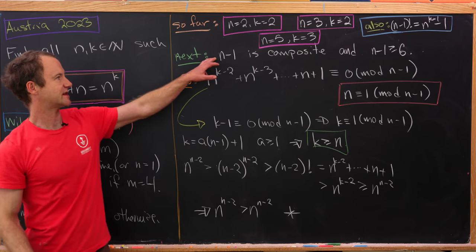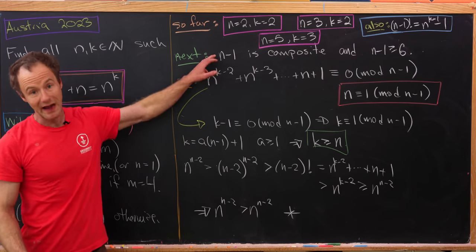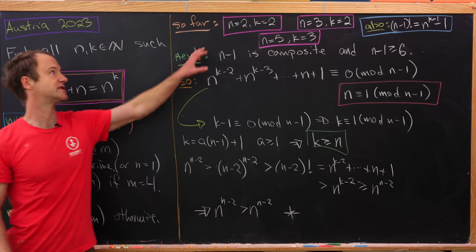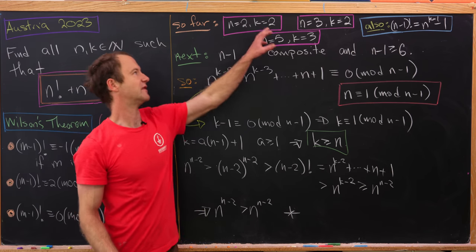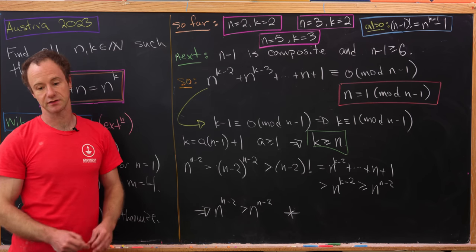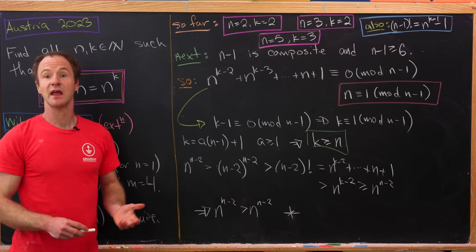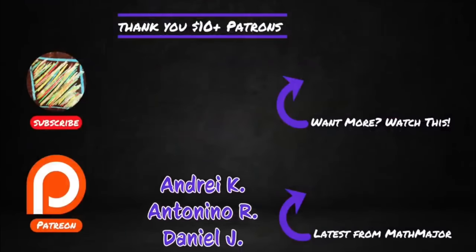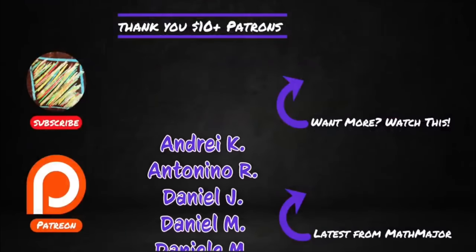That means in the remaining cases there are no solutions, meaning our three solutions — (n,k) = (2,2), (3,2), and (5,3) — are the only solutions. And that's a good place to stop.